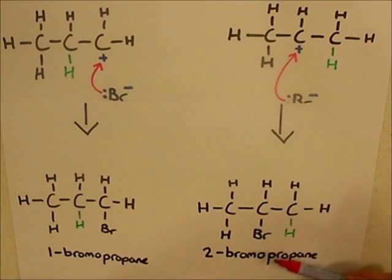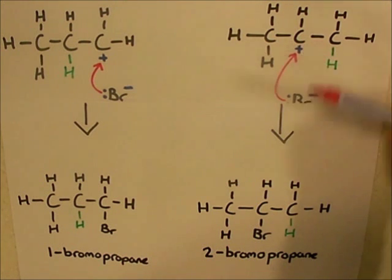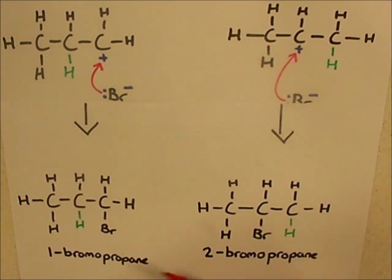So here we've got 2-bromopropane because the bromine has added to the second carbon and the hydrogen to the first carbon, and here we've got 1-bromopropane because the bromine is added to the first carbon.